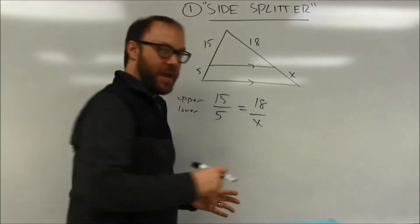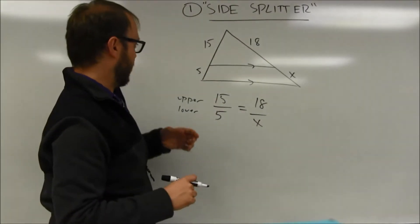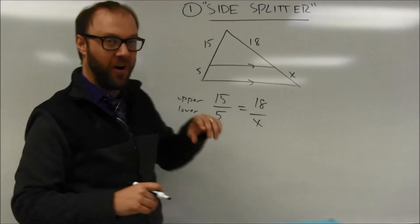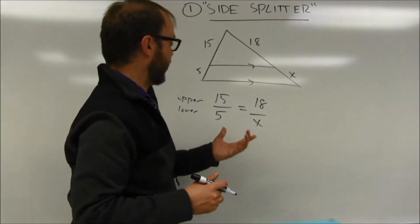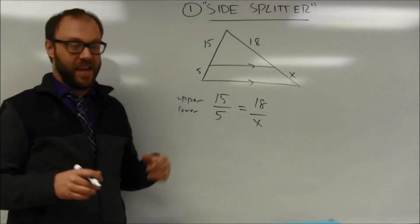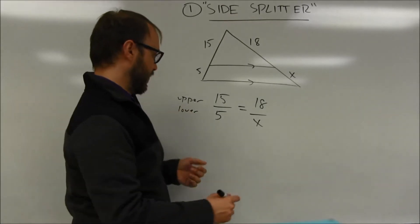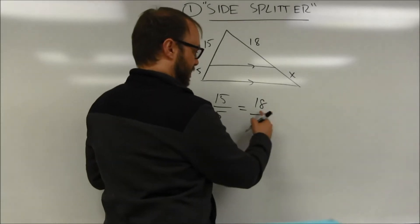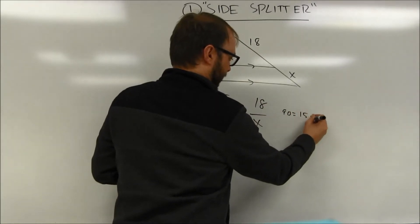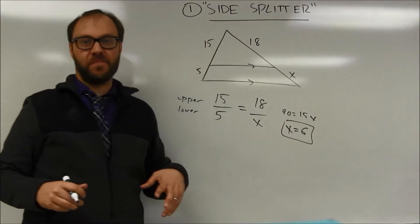You may be able to see the proportional relationships in some cases. For example, you can see the upper part is three times as long as the lower part, and that same thing is going to hold on the other side. You can cross multiply here and solve. In this case, 5 times 18 is 90, which equals x times 15, and x ends up being 6.